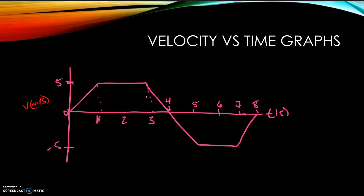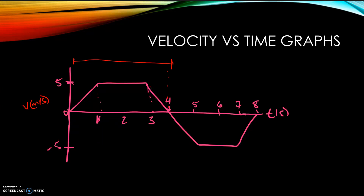This entire section — from here all the way over to here — the object is moving forward, even though it has a negative slope. It still has a positive velocity, and a positive velocity means it's moving in the forward direction. The negative slope here just means it's moving forward but slowing down. So this entire section it is moving forward.